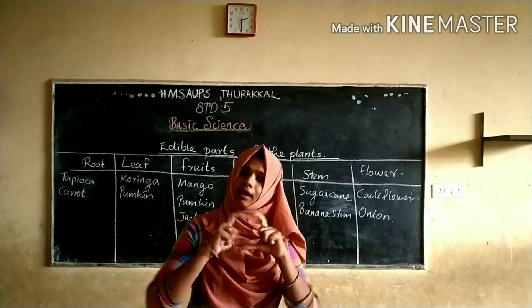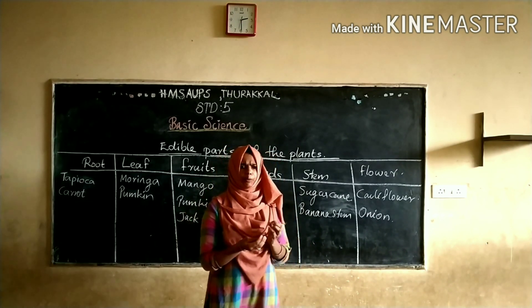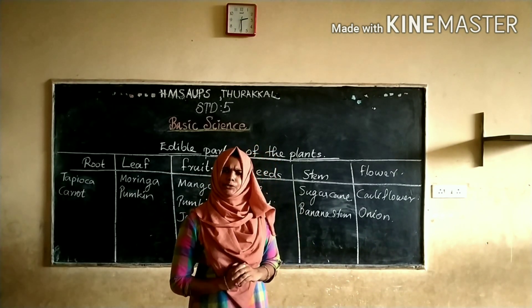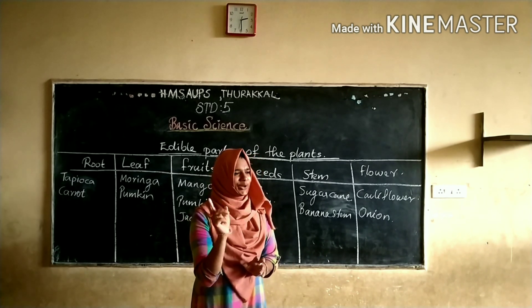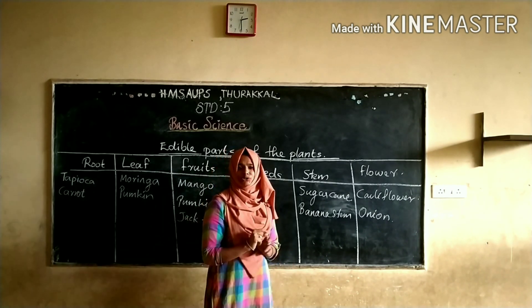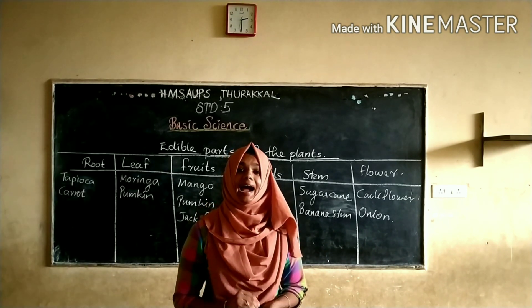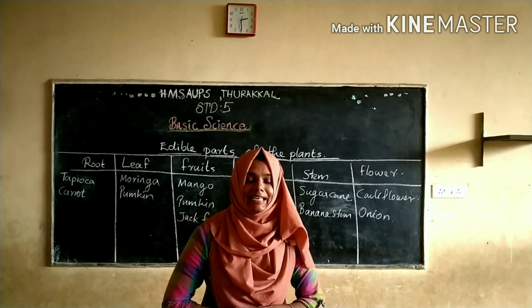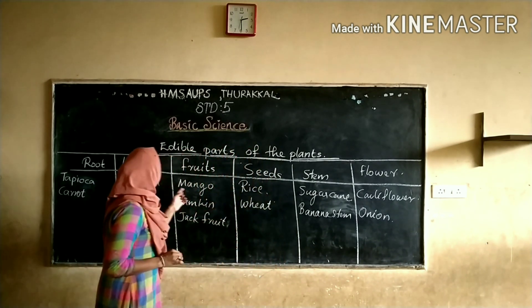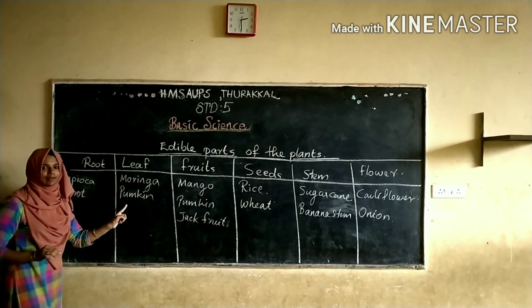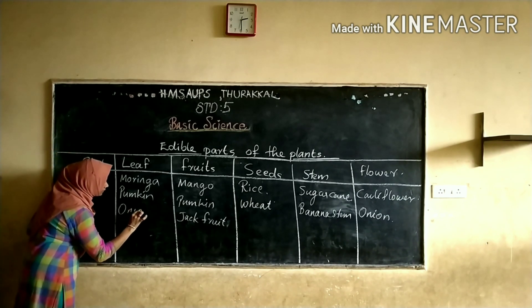Then what about onion? What is the edible part of onion? Do you know that? No, it's not root. What is that? It is modified leaf. Modified leaf. So I am going to write onion here, in the leaf column.